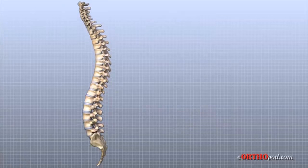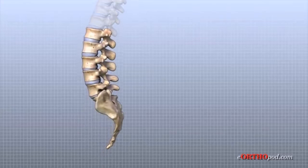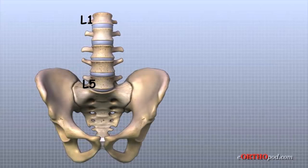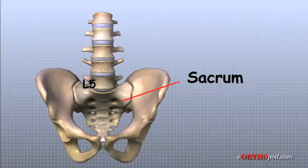The lumbar spine is made up of the lower five vertebrae. Doctors often refer to these vertebrae as L1 to L5. The lowest vertebra of the lumbar spine, L5, connects to the top of the sacrum, a triangular bone at the base of the spine that fits between the two pelvic bones.